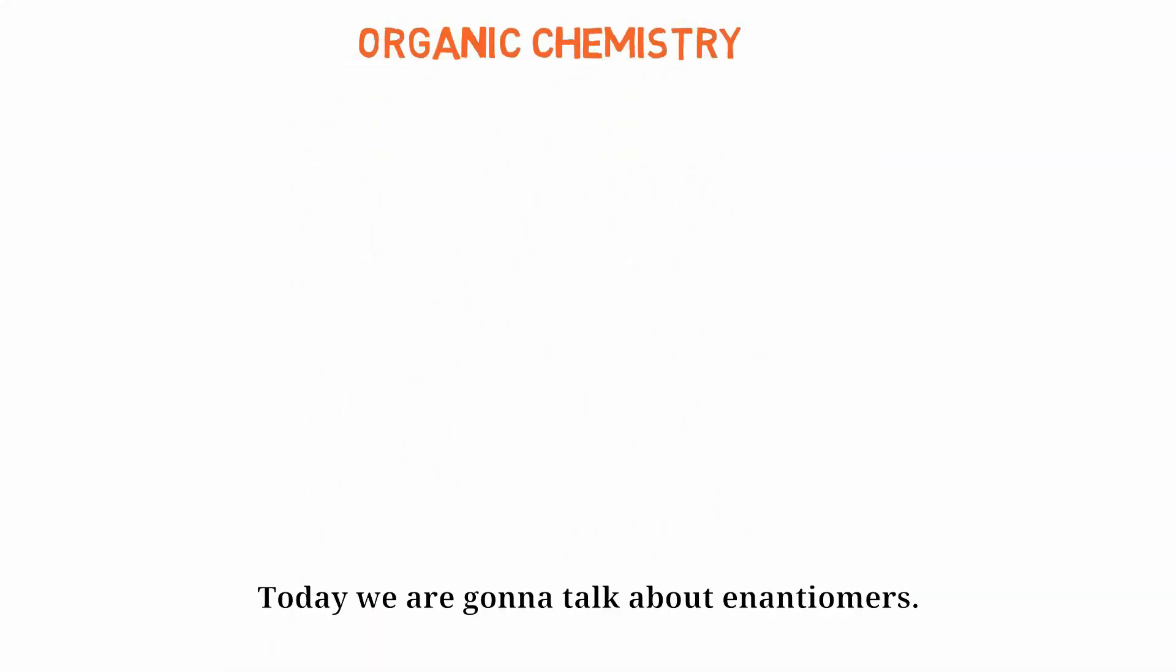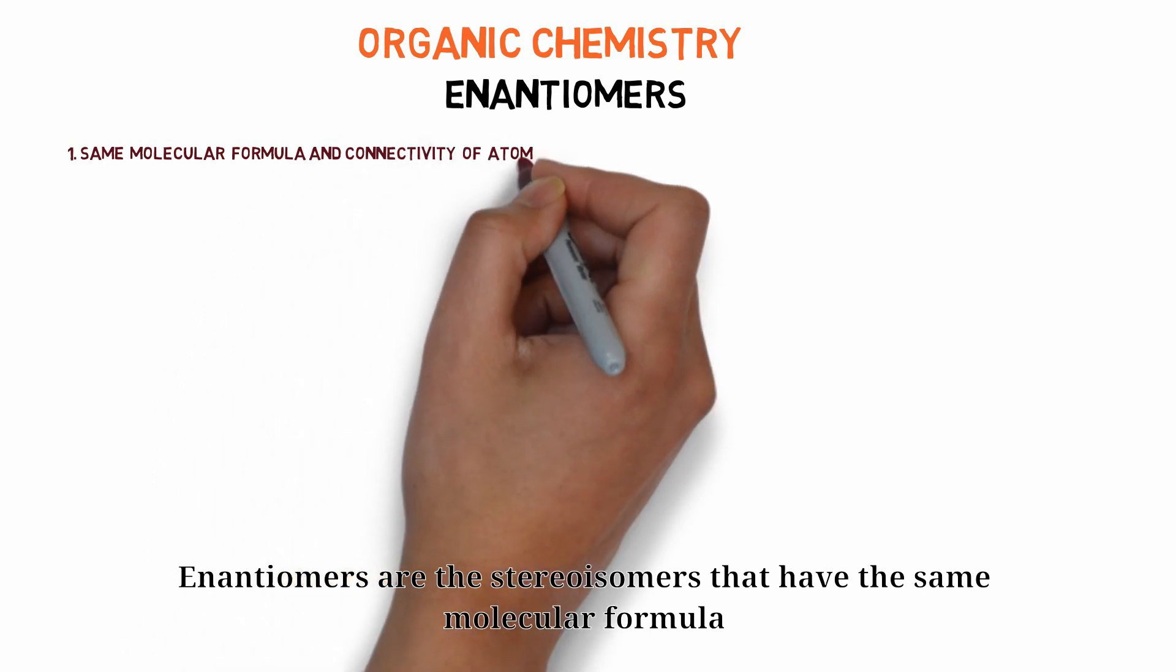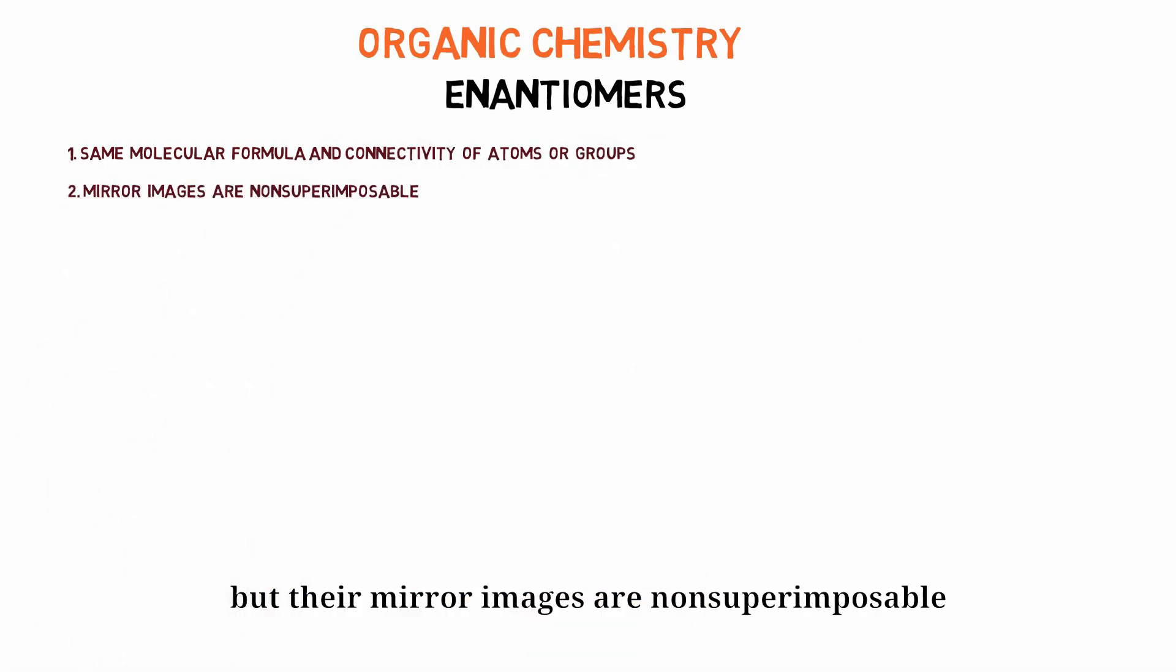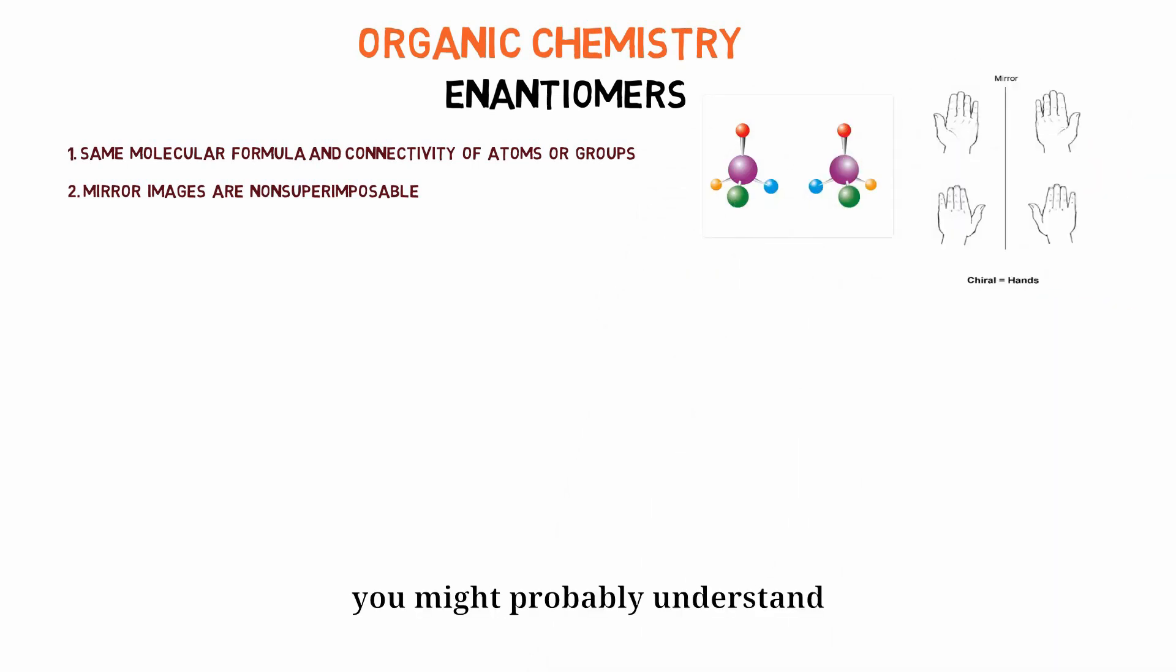Hey guys, I hope you're doing well. Today we're going to talk about enantiomers. Enantiomers are stereoisomers that have the same molecular formula but their mirror images are non-superimposable. If you look at your left and right hands, you might probably understand.